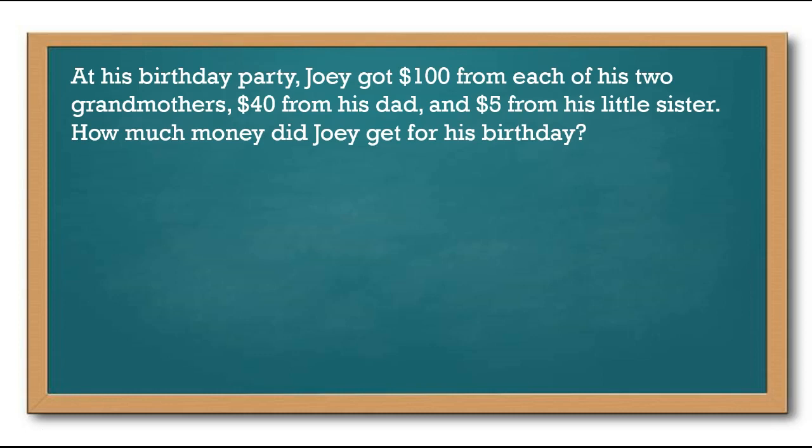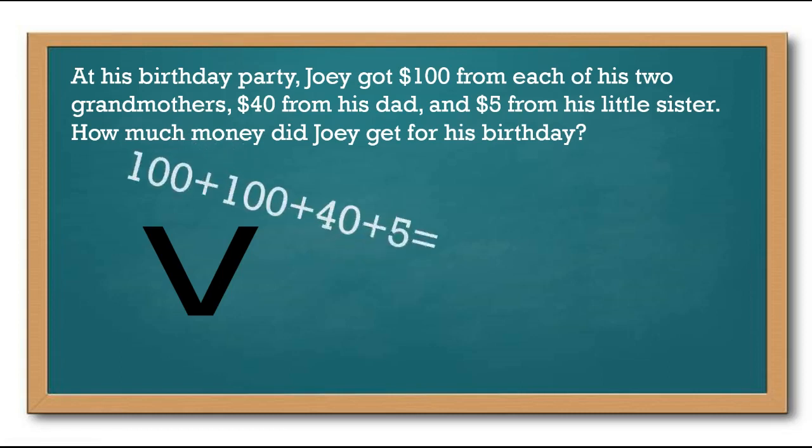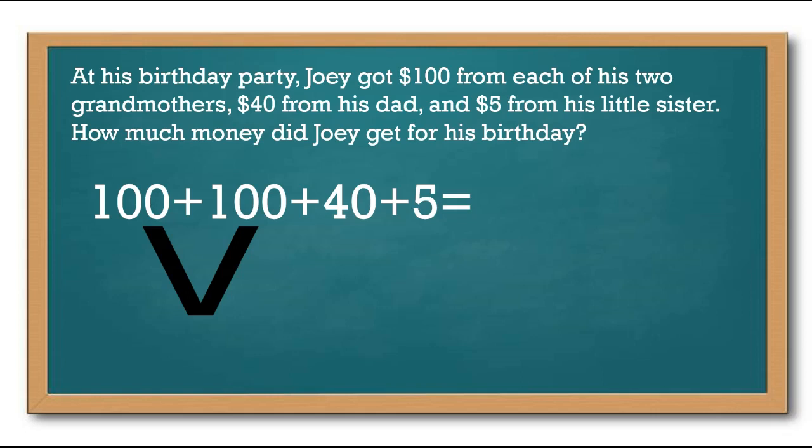Okay, so here is one way you could have solved this. You needed to make a number sentence and I believe we should be adding because it says how much money did Joey get for his birthday party, so you're adding up how much he got all together. So I put 100 + 100 + 40 + 5, and the reason why I put two 100's here is because he got $100 from each of his grandmothers and he has two. So you needed to make sure you got two down: 100, 100 plus 40 from his dad and 5 from his little sister.